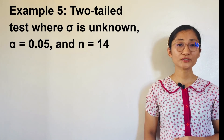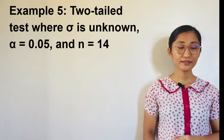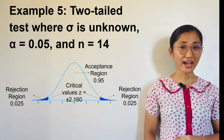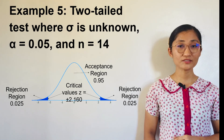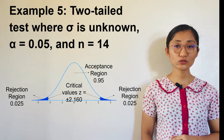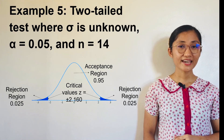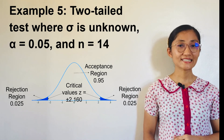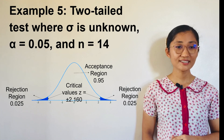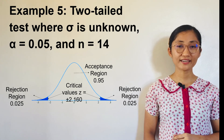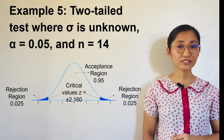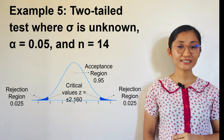Example 5: Two-tailed test where sigma, or population standard deviation, is unknown; alpha equals 0.05 and sample size n equals 14. This is a two-tailed test with one-half of 0.05 equals 0.025 rejection regions on both the left and right tails, and df equals 14 minus 1, or df equals 13. Since sigma is unknown, we use the T-score. From the T-table, T equals positive 2.160, so the critical value on the left tail is negative 2.160 and on the right tail is positive 2.160. The rejection region is T greater than or equal to positive 2.160 or T less than or equal to negative 2.160.